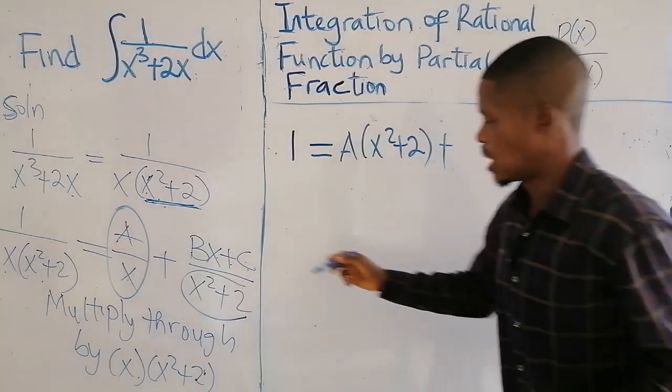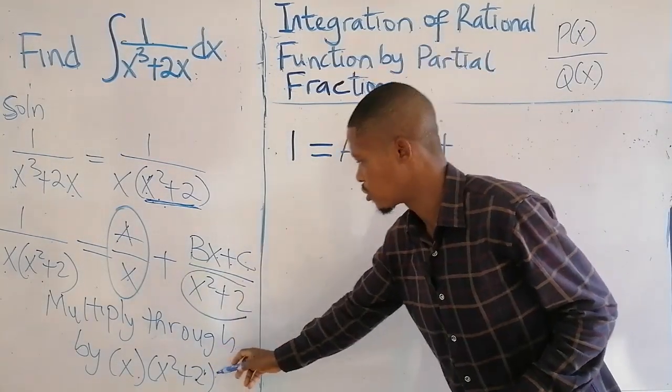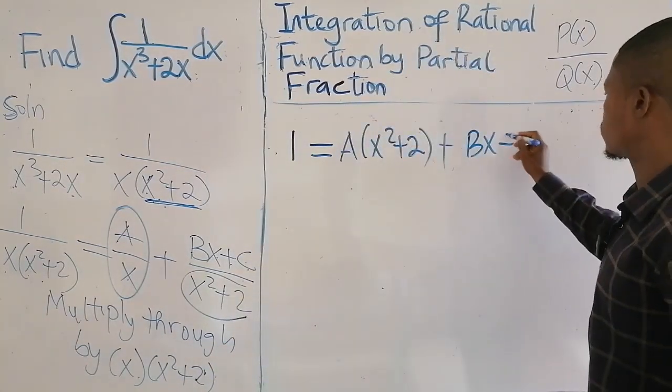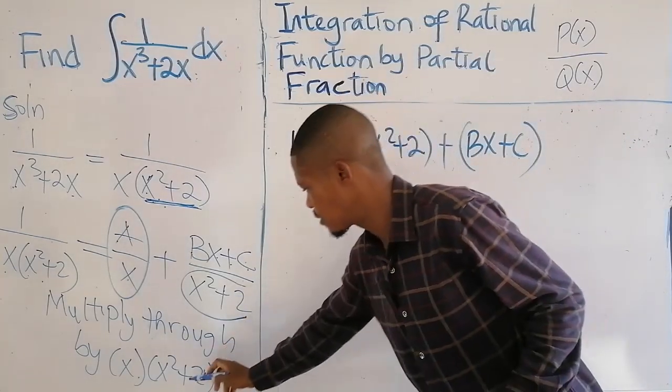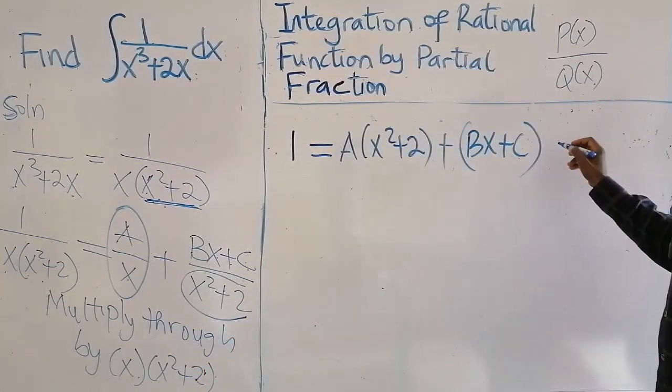this X here and this one here we cancel. So we have A times X squared plus 2. Then plus, so this one times the common factor BX plus C. So this and this we cancel. So times X.